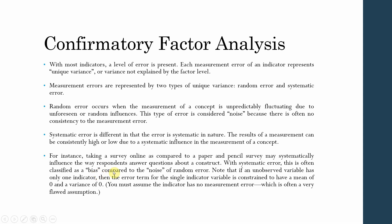Note that if an unobserved variable has only one indicator, then the error term for the single indicator variable is constrained to have a mean of 0 and a variance of 0.